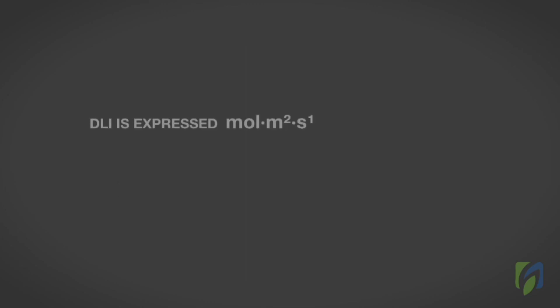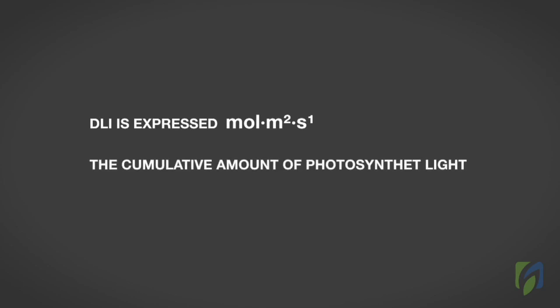Daily light integral is expressed in units of moles of light per square meter per day. DLI is the cumulative amount of photosynthetic light received in one square meter of area, 10.8 square feet, each day.